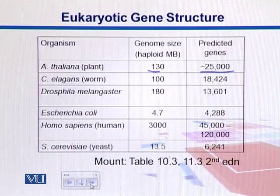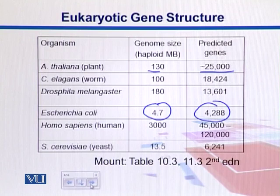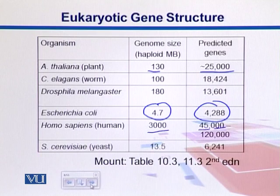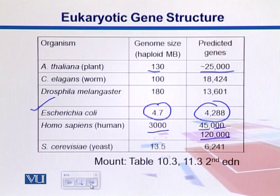E. coli, one prokaryotic bacterium, has a genome size of 4.7 MB and over 4,000 genes. In humans, the genome size is 3,000 MB — MB here means megabase pairs, not megabytes. There are an expected 45,000 to 120,000 genes, though around slightly over 30,000 have been identified. If we take the number of genes and divide by the genome size, smaller organisms have more gene density compared to larger genomes.